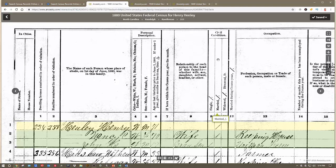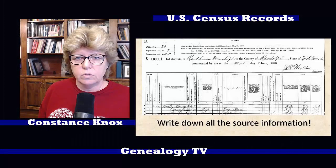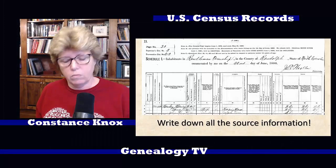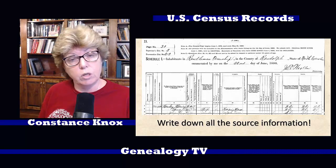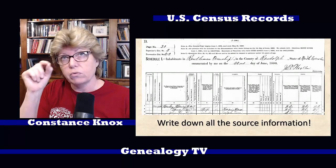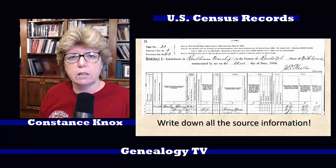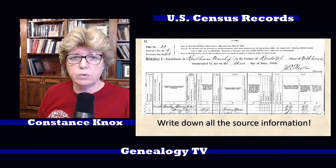The sad news is that the 1890 census was almost completely destroyed, so we have to skip over to the 1900 census. The point is that we need to write down all of our source information. Sources are critically important — because if you don't write down your source information, ten years from now when you want to go back and find that information again, or look at it a little closer, you'll need to know where you found it. That's super important.